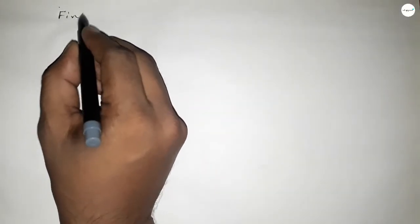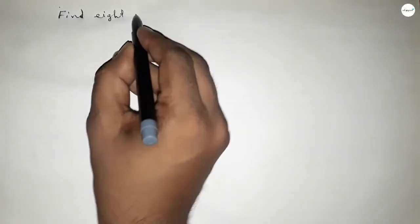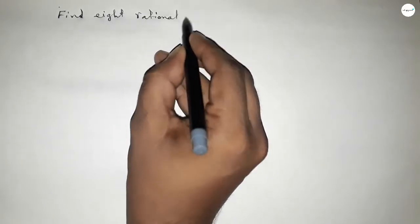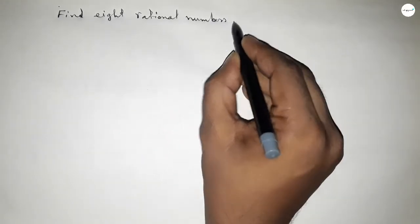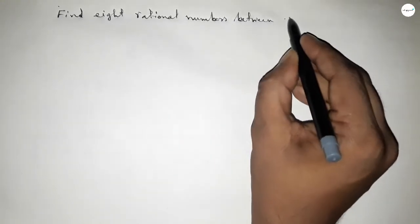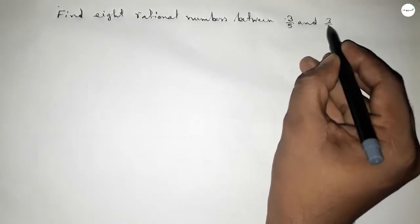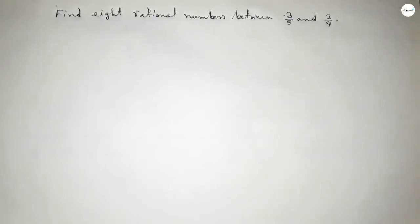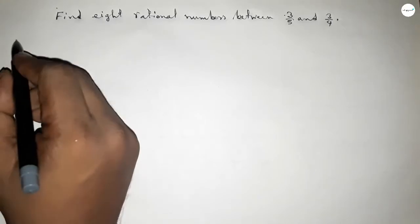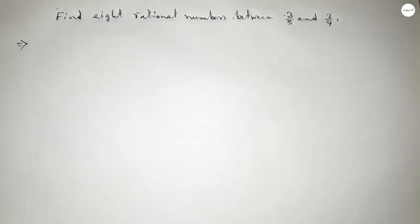Hi everyone, welcome to SSR classes. Today in this video we have to find eight rational numbers between 3 over 5 and 3 over 4. So let's start the video. First of all, write down here the given numbers 3 over 5 and 3 over 4.